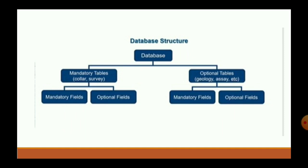For the database structure, we can understand that there are four tables for making a database. Three tables are mandatory: collar, survey, and either geology or assay. Between geology and assay, we can choose one file for creating a database.